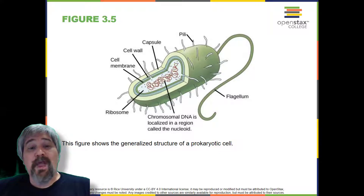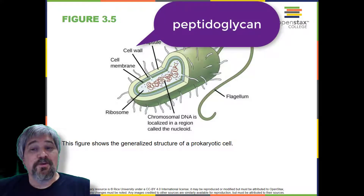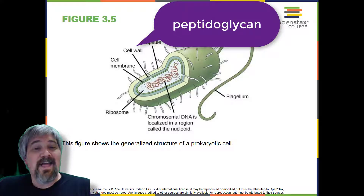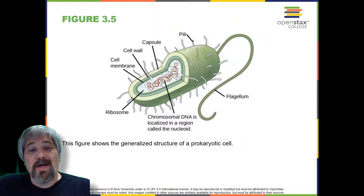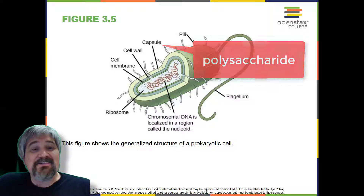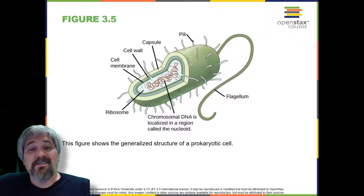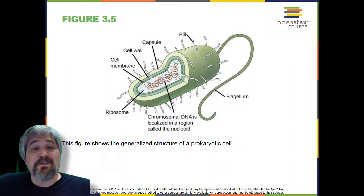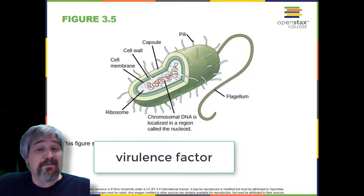Unlike archaea and eukaryotes, bacteria have a cell wall made of peptidoglycan, comprised of sugars and amino acids, and many have a polysaccharide capsule. The cell wall acts as an extra layer of protection, helps the cell maintain its shape, and prevents dehydration. The capsule enables the cell to attach to surfaces in its environment, and is generally considered a virulence factor.